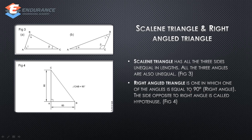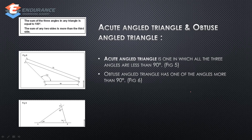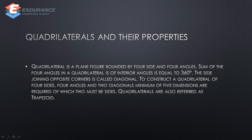In a right angle triangle, the reference line and the perpendicular line form 90 degrees. The next ones are acute angle triangle and obtuse angle triangle. In an acute angle triangle, all triangle angles are less than 90 degrees. In an obtuse angle triangle, one angle is greater than 90 degrees. The next topic is quadrilateral and their properties. A quadrilateral is a closed figure with four sides and four angles.